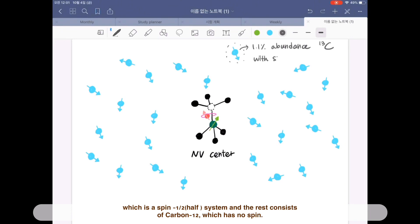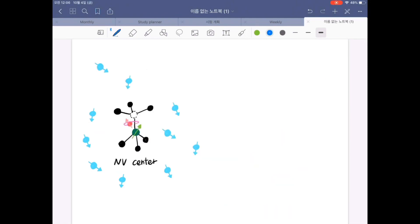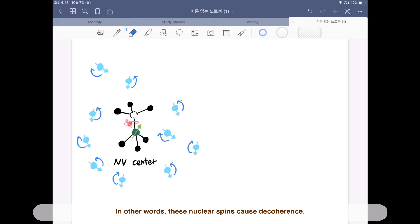which is a spin-half system, and the rest consists of carbon-12, which has no spin. In other words, these nuclear spins cause decoherence.